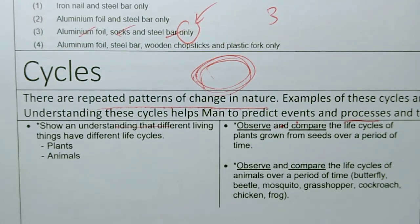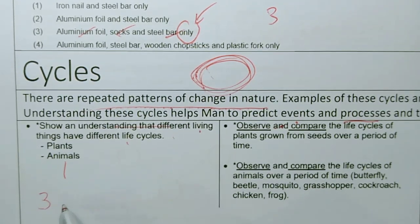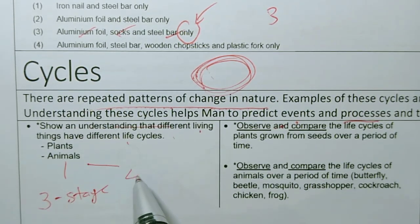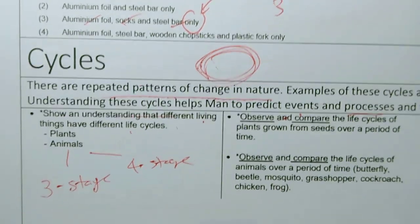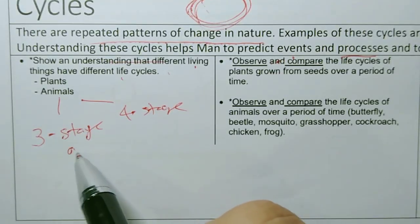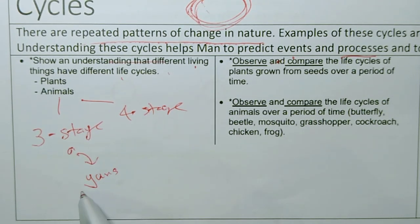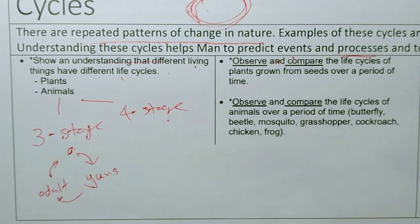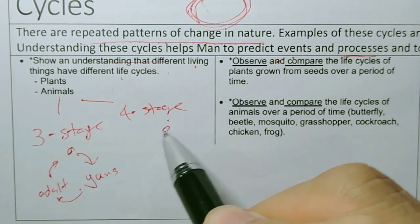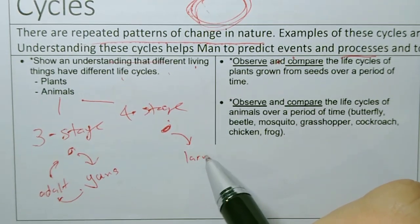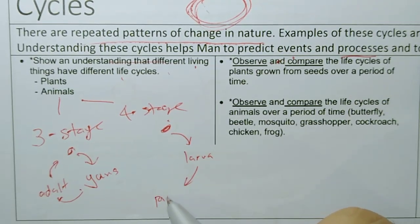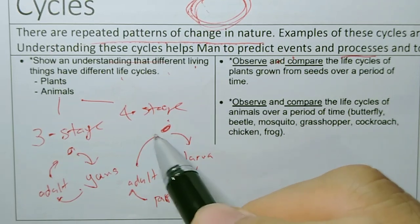For the living things part, you must show understanding that different living things have different life cycles. For animals we have animals with three stage life cycle and four stage life cycle. You learn three stage life cycle typically described by egg, young, adult, and the adult will lay eggs again. For a four stage life cycle you will see two things not found here. The egg will hatch into larva, larva will grow into pupa. In the pupa stage the animal undergoes metamorphosis, a change into an adult. Adult will mate and lay eggs.